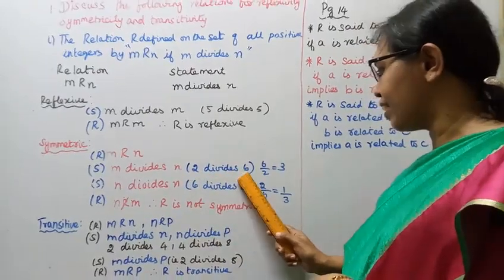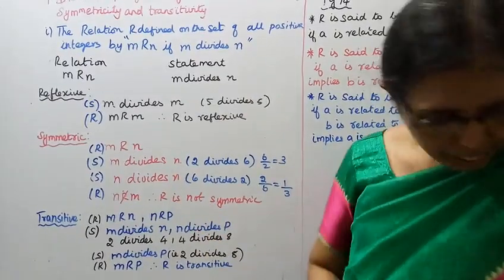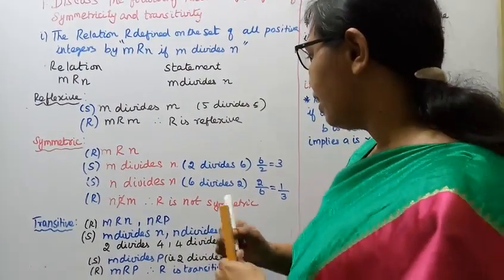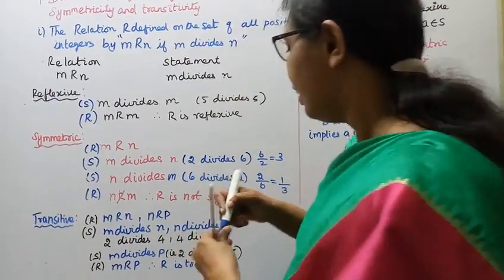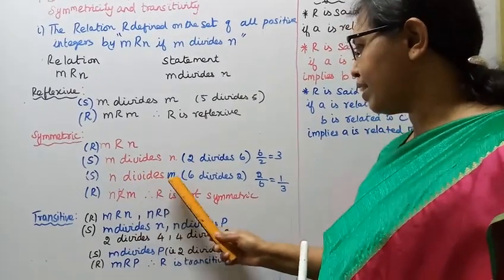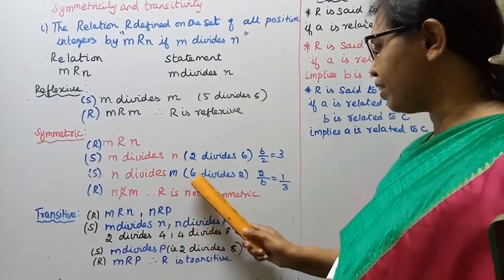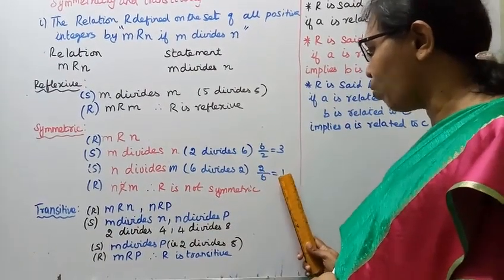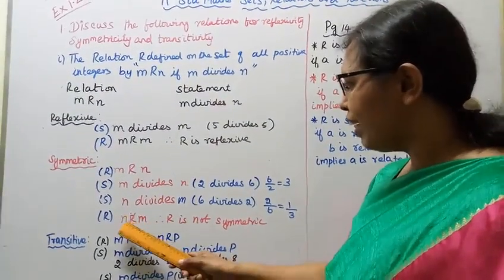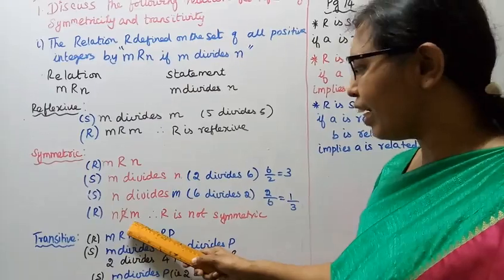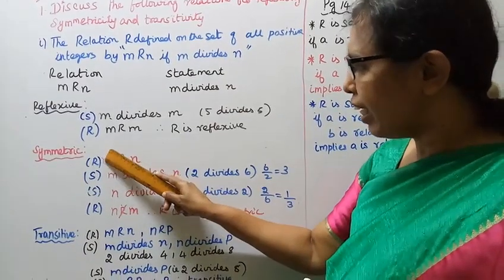For symmetric: take M = 2, N = 6. M divides N: 2 divides 6, since 6 divided by 2 equals 3 — a positive integer. Now check N divides M: 6 divides 2? 2 divided by 6 is 1/3, which is not a positive integer. Therefore N does not relate to M, so R is not symmetric.